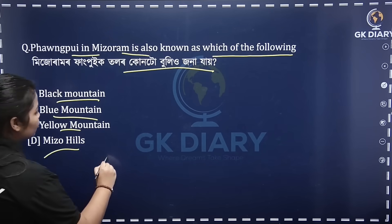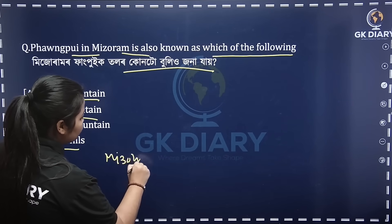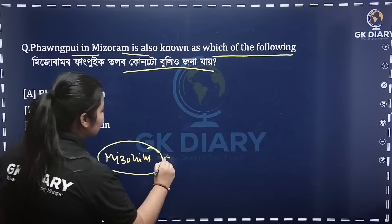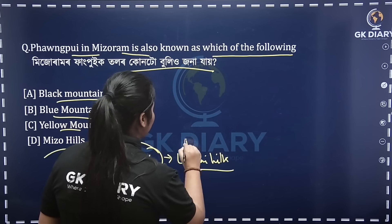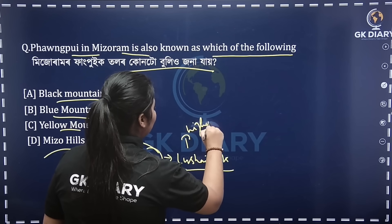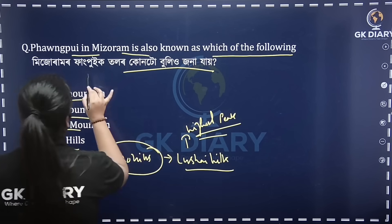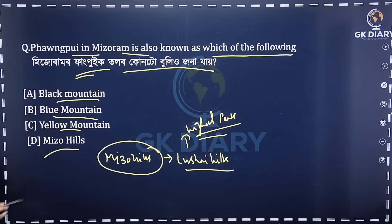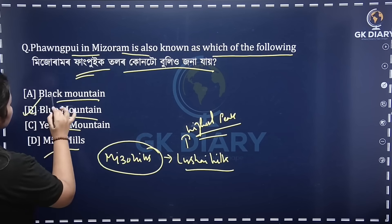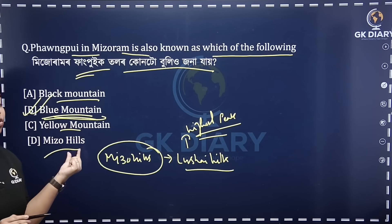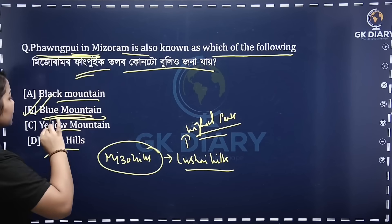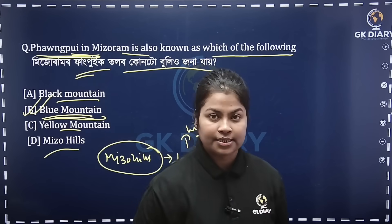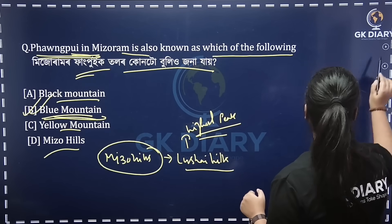This is the highest peak of Mejo Hills. The highest peak of Mejo Hills — if you want to know the name, what is the name of Blue Mountain? Option B is the correct answer. So the correct option here is B.